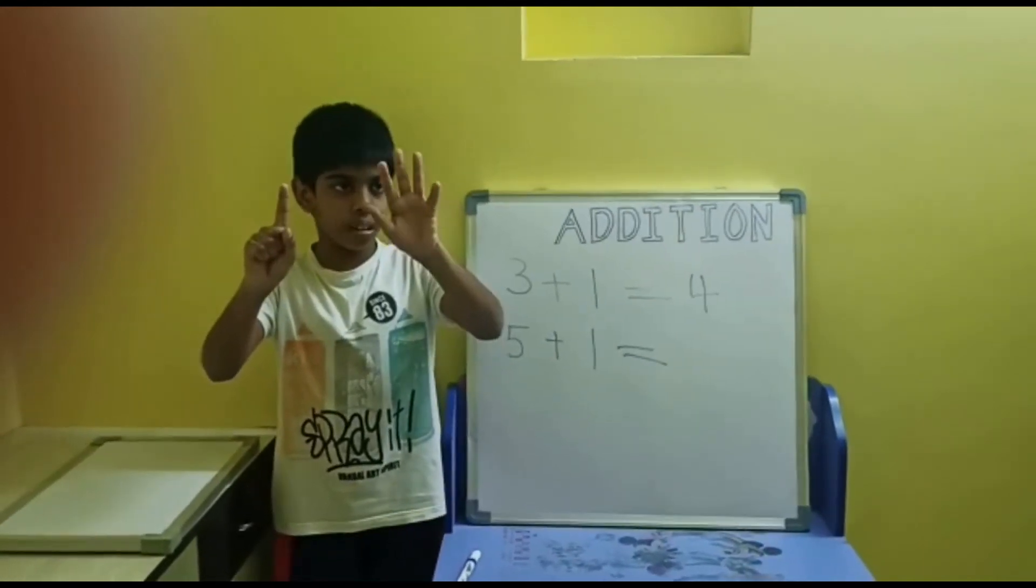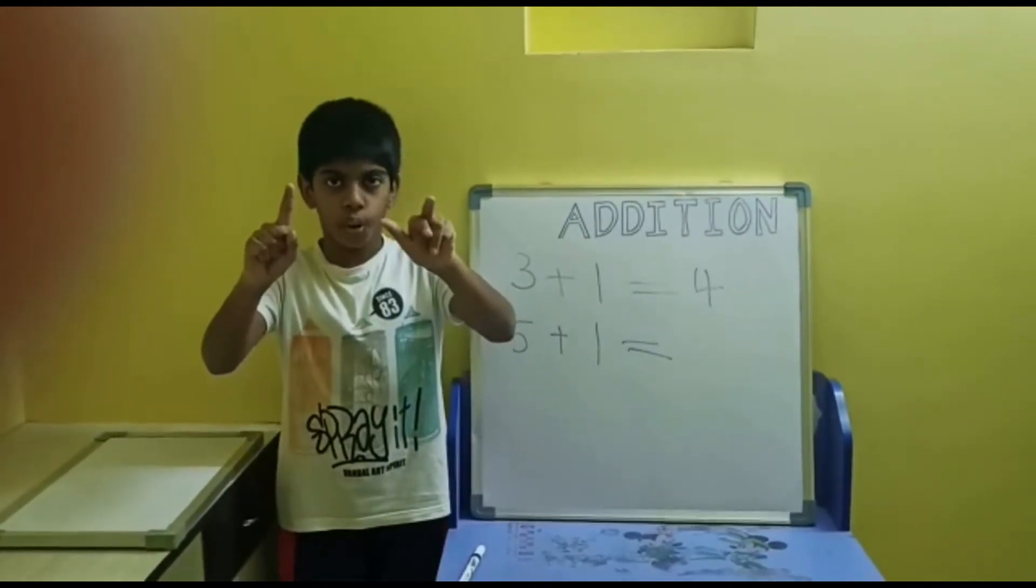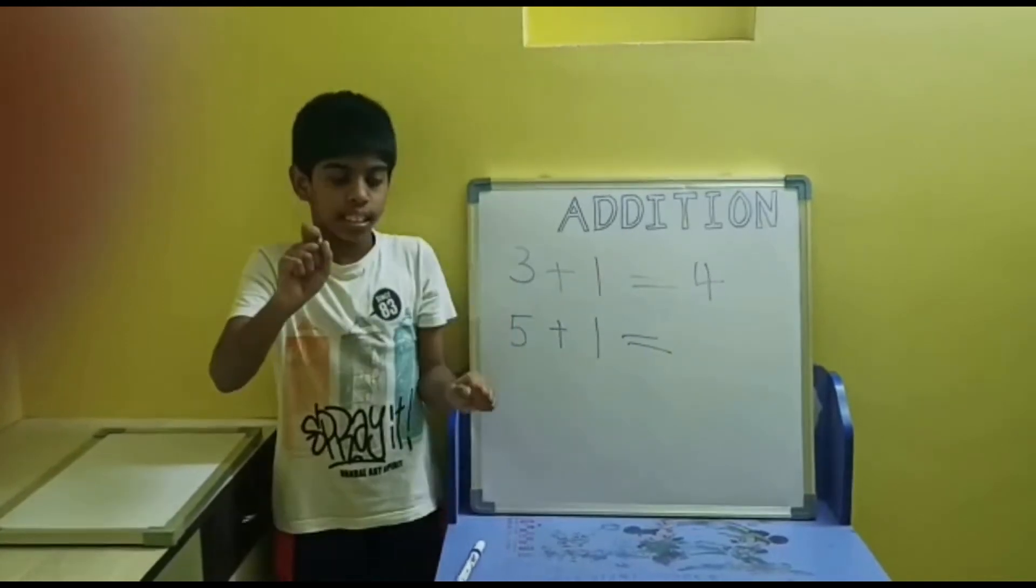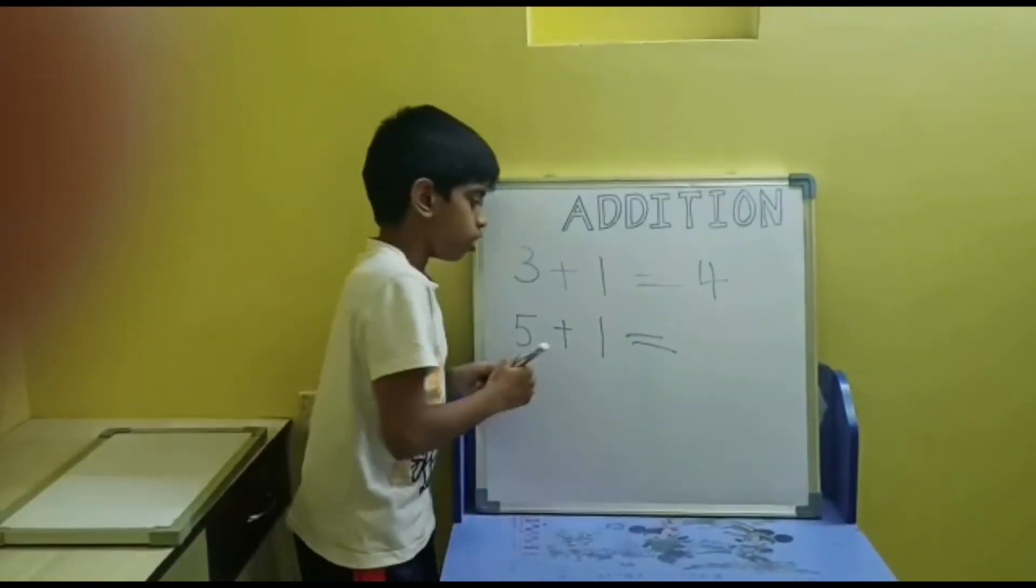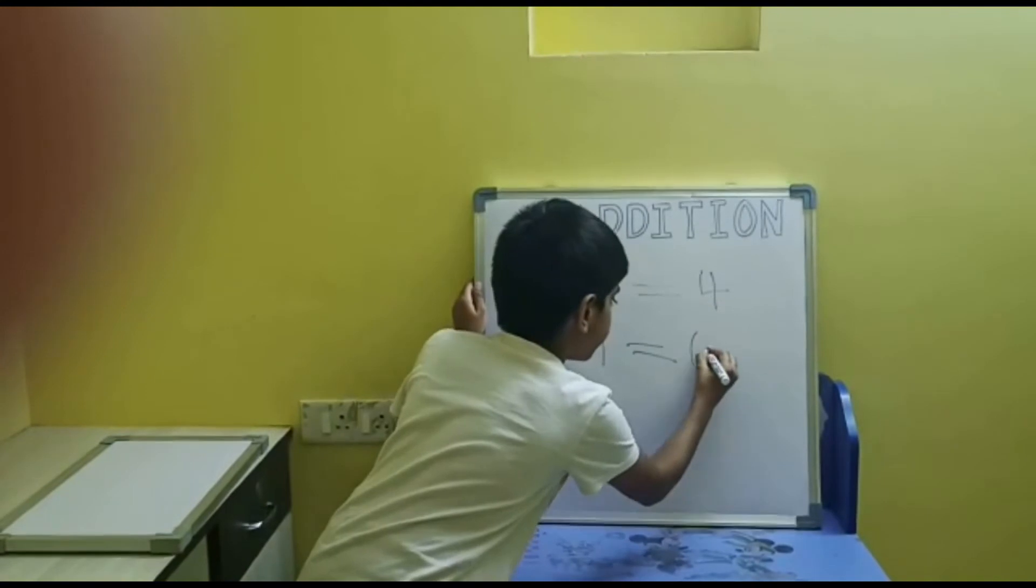And one in the right hand. Then totally one, two, three, four, five, six. Six fingers. So six is the answer.